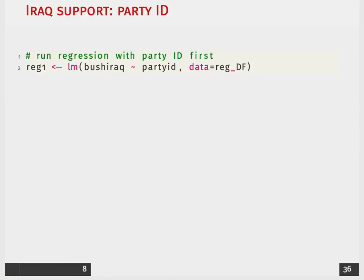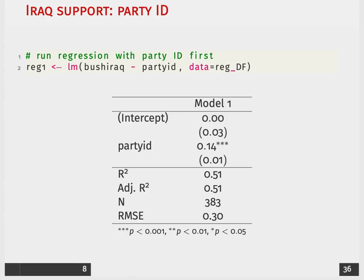We can also try to model this relationship using a linear relationship, so we'll execute our linear model using LM in R with Bush support as our outcome and party ID as our main covariate. We can then see that we get an estimated coefficient of approximately 0.14, which we can interpret as a one-unit increase in party ID leads to approximately an increase of 0.14 in support for Bush, so a 14% increase for President Bush.